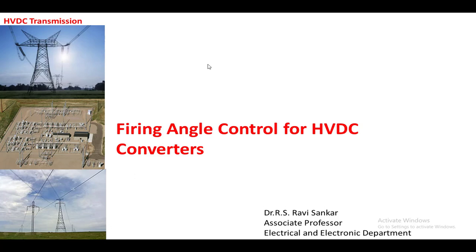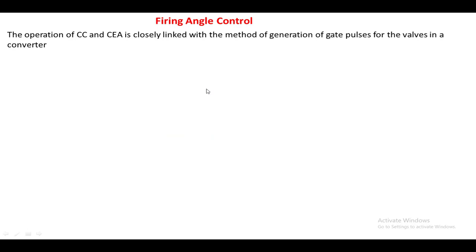Welcome back to the class on HVDC transmission systems. In this lecture we are going to discuss the firing engine control for HVDC converters. In HVDC systems, both the rectifier station and inverter stations are present. Generally the rectifier station is operated with constant current control whereas the inverter station is operated with constant acceleration angle control. These two controls are very closely linked with how the firing pulses are generated to the converter.